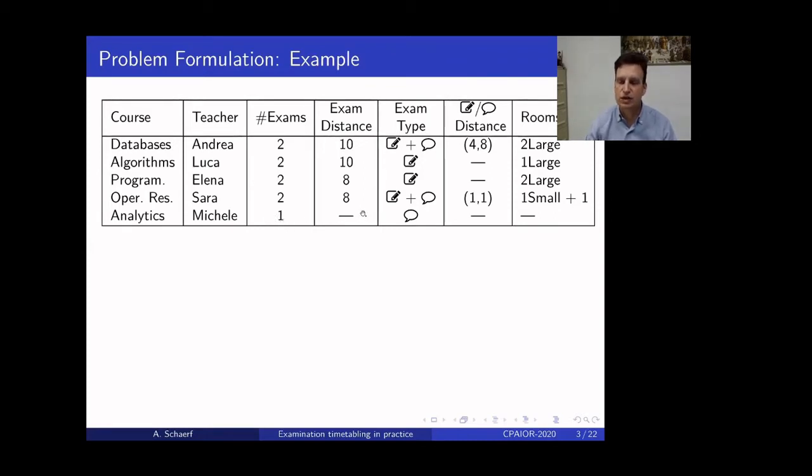The exam can have different examination types, so it can be written, oral, or written and oral. In case of written and oral, this should be given in strict order, and there is a minimum and maximum distance between the two parts. And then there are requests mainly for the written part, but can also be requests for the oral part. For example, this exam asks for one small room for the written part, and one any room for the oral part. Normally, written parts require large rooms.